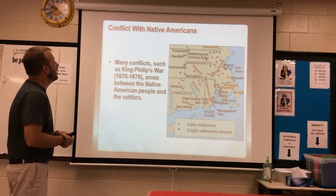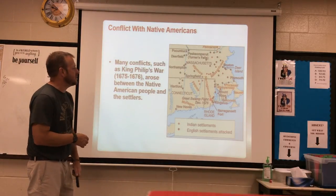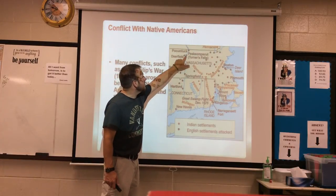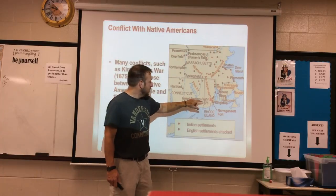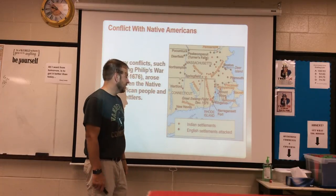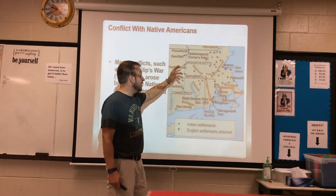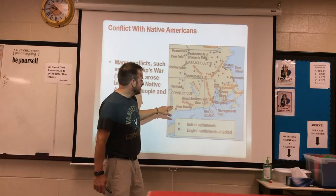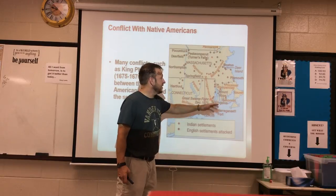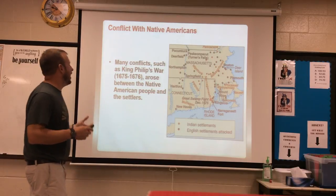Conflict with Native Americans — many conflicts such as King Philip's War arose between the Native American people and the settlers. Looking at the map, the English settlements that were attacked are represented by black dots, and the red diamonds represent Native American settlements. As the colonies grew and spread, they were going around the Indian settlements and surrounding them, taking over Native American land — and you can see where there was going to be an issue and conflict.